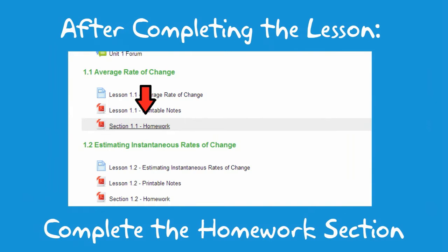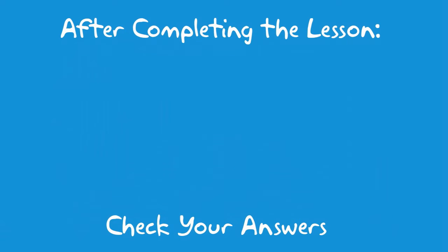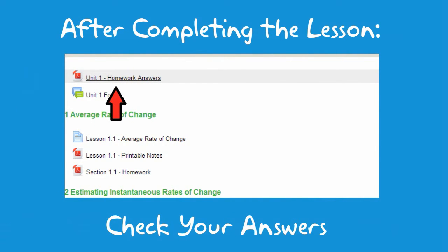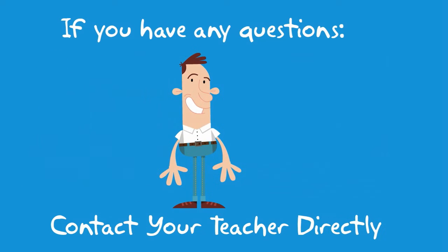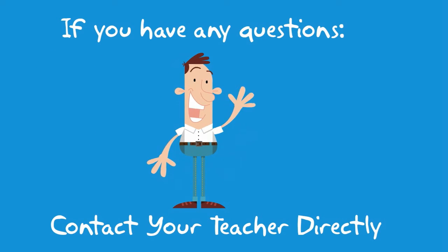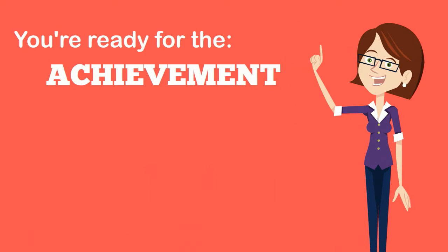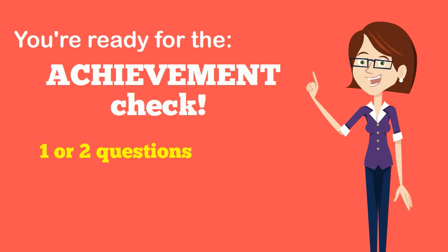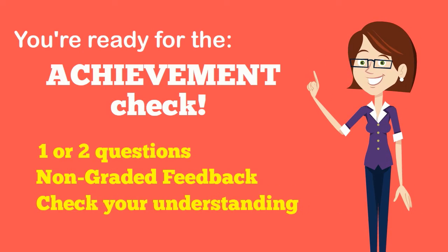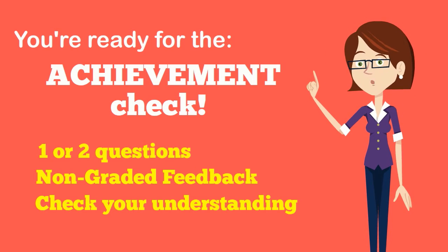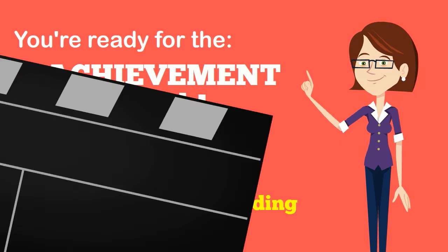After completing the lesson, you need to complete the homework. Remember to check your solutions. If you have any questions when working through the homework, use the unit form or contact your instructor directly. After you have completed the homework, you're ready for the achievement check. The achievement check is one or two questions on the section that gives you non-graded feedback to check your understanding of the section.